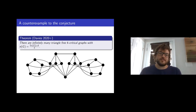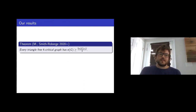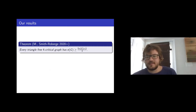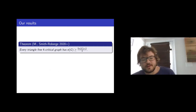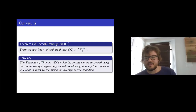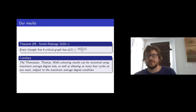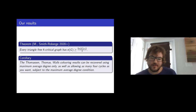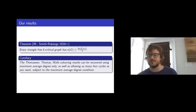So the conjecture is false, but we still managed to get somewhat close. Evelyn and I proved that every triangle-free 4-critical graph has |E| ≥ (5|V| + 2)/3. This says we can recover the coloring results about girth-5 graphs embedded on surfaces without really talking about the surface at all, and also allowing as many 4-cycles as you want, so long as you don't push the maximum average degree too high.